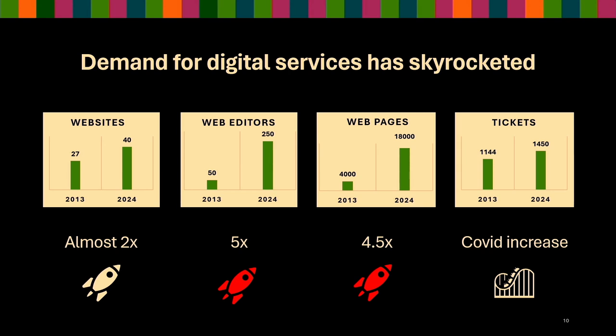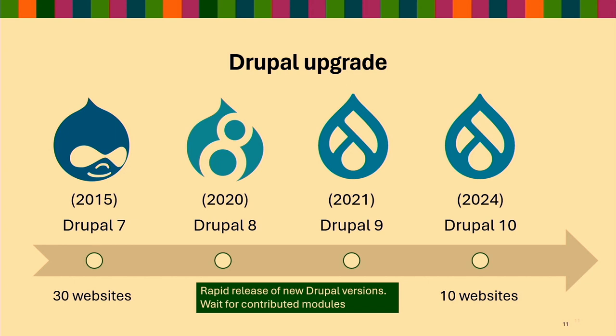Websites have become the main source to promote degrees, projects, news, events, and enable collaboration across the university. In terms of Drupal upgrades, we've migrated 10 websites to Drupal 10 and we still have 30 to go. This has been delayed by the rapid release of new Drupal versions, and we've been waiting for some contributed modules to become available to be able to migrate them all.